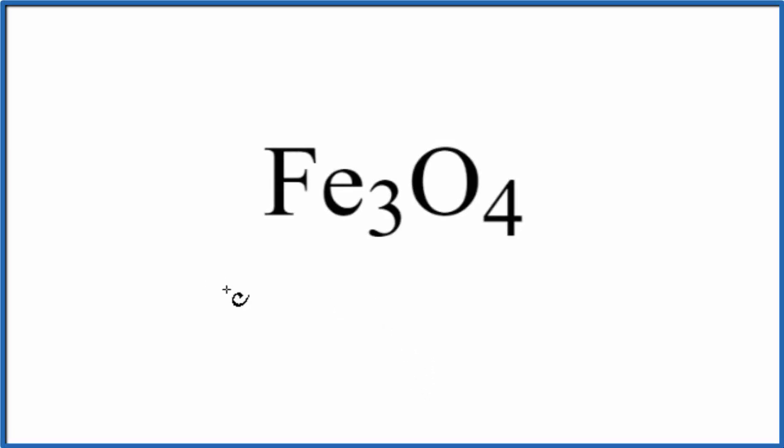You might be asked to write the name for Fe3O4. This is an iron oxide, but specifically it gets confusing about how we write the Roman numerals for the iron here since it's a transition metal.